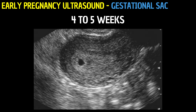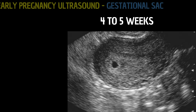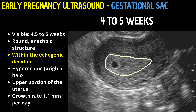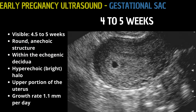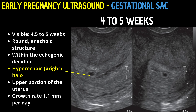In this initial phase of pregnancy, our focus is on the gestational sac, the earliest ultrasound evidence of a pregnancy. By approximately 4.5 to 5 weeks of gestational age, the sac becomes visible on transvaginal ultrasound as a round, anechoic structure. It is situated eccentrically within the echogenic environment of the decidua, the uterine lining that has thickened in response to pregnancy. A key feature of the gestational sac at this stage is its hyperechoic halo, a result of the decidual reactions surrounding the sac, providing a stark contrast to the anechoic fluid-filled sac center.